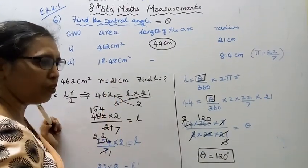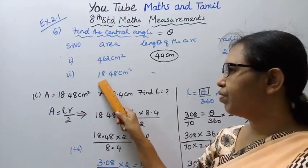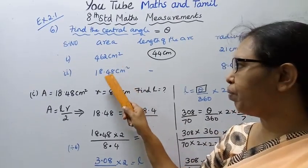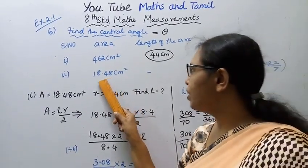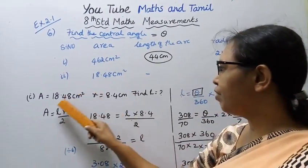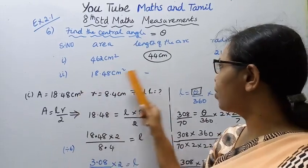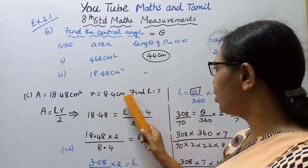Now, the second subdivision. The area is 18.48 cm squared, and R is 8.4 cm.